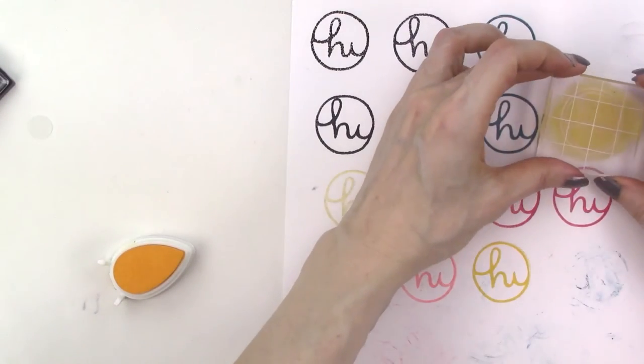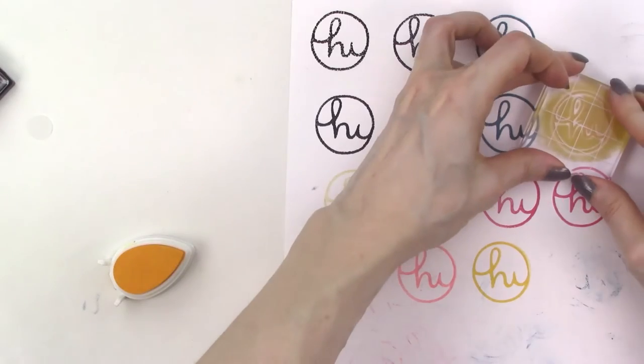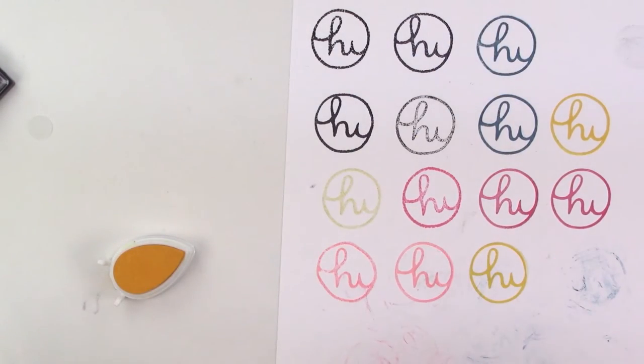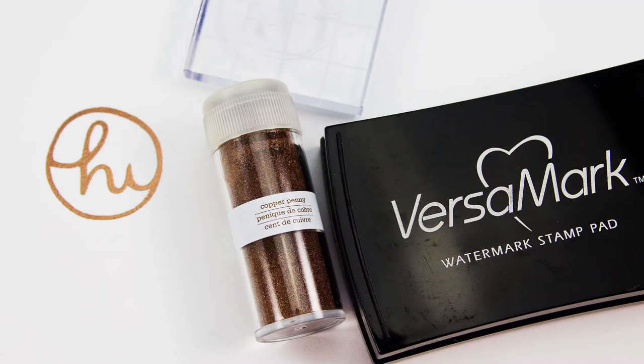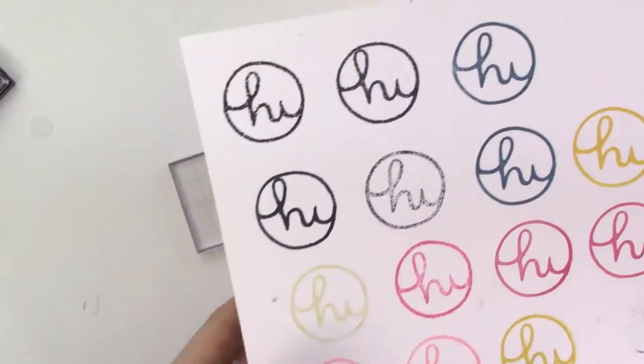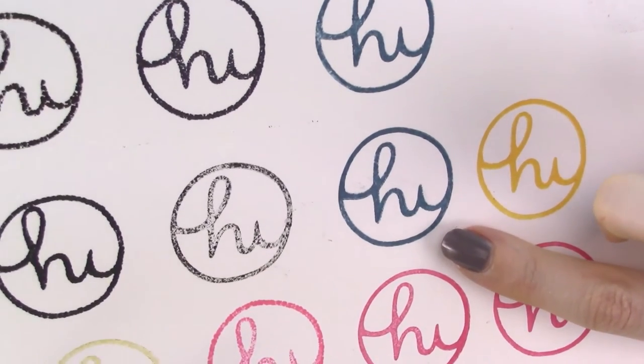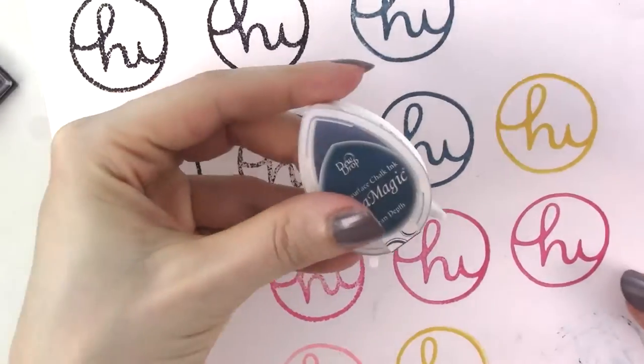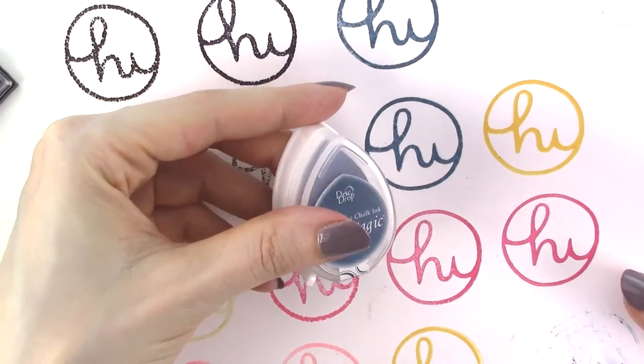I went back to the Versamagic chalk pigment ink for my next try and again I got great results. And I forgot to include this ink in the initial testing but I also tried the Versamagic watermark ink which is a very sticky and thick ink and got great results with that too. So the verdict is that pigment and other thick and sticky inks in general are a thumbs up for the stamp material and dye and solvent based inks are not.